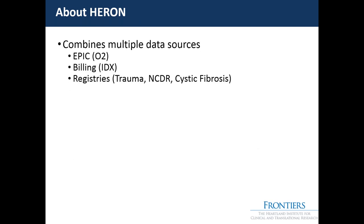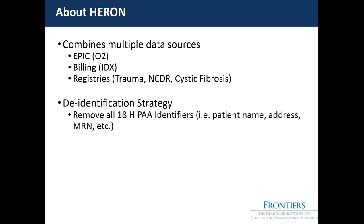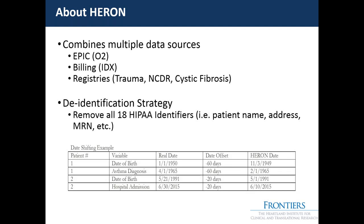About Heron: we combine multiple data sources. Locally we have EPIC, which we call O2, billing data from IDX, and various registries such as the trauma registry, cardiovascular disease registry, and cystic fibrosis registry. We de-identify everything to remove all 18 HIPAA identifiers including patient name, address, and MRN. We also do date shifting because part of an identifier is anything except for the year. We date-shift each patient from 1 to 365 days in the past, and the shift is consistent for each patient.